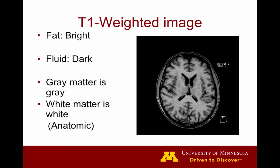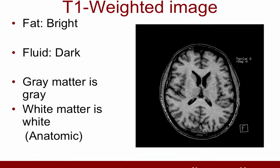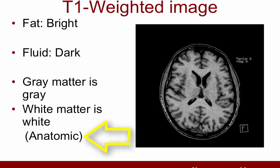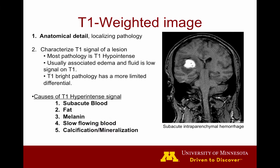This is an example of a T1-weighted image. You can see some subcutaneous fat that is bright, the CSF signal is dark, the gray matter is gray, and the white matter is white, which you can remember is anatomic — gray is gray and white is white.